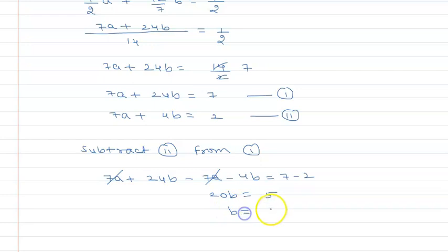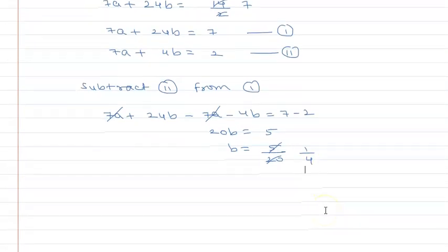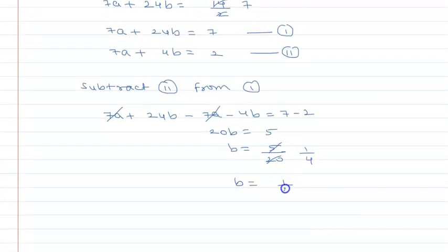So b = 5 upon 20, which simplifies to b = 1 upon 4.